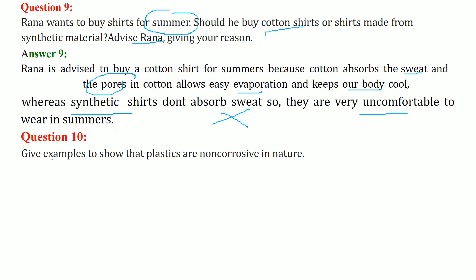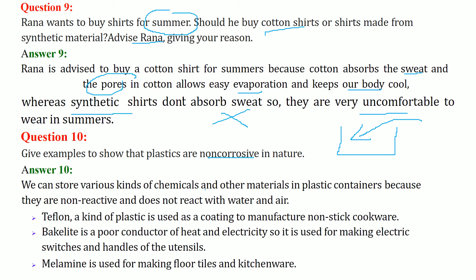Give examples to show that plastics are non-corrosive in nature. If you put a reactive chemical inside a plastic container, it will not react — that is why plastic is non-corrosive. We can store various kinds of chemicals in plastic containers because they are non-reactive and do not react with water or air. Teflon, Bakelite, and Melamine are examples.